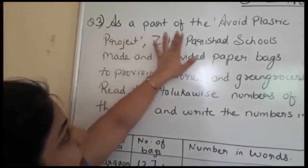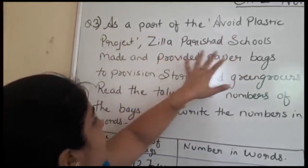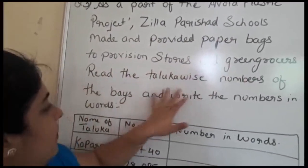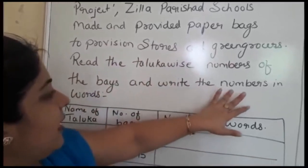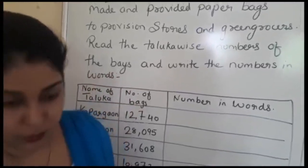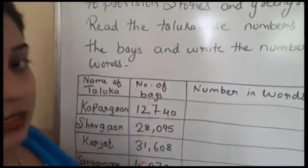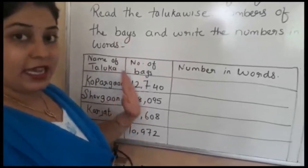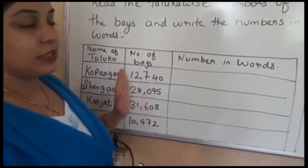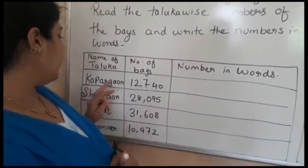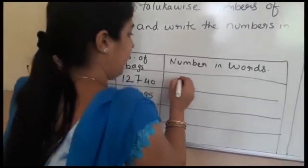Question number 3: As a part of the Avoid Plastic Project, Zilla Parishad Schools made and provided paper bags to provision stores and green grocers. Read the Taluka-wise numbers of the bags and write the numbers in words. In your textbook, the table is given horizontally, but I have made this table vertical. This is name of Taluka, this is number of bags they have made and provided. We have to write this number in words. First, Kopargaon: 12,740. Here we write in words: twelve thousand, seven hundred and forty.